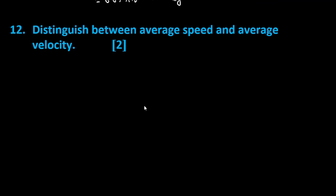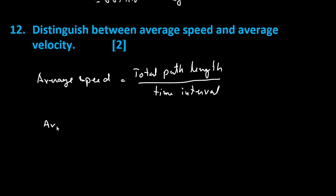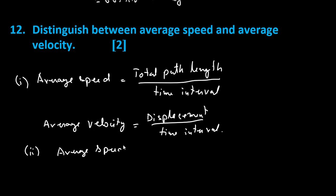Distinguish between average speed and average velocity. So, average speed is equal to total path length divided by time interval. And average velocity is displacement divided by time interval. This is point number 1. And point number 2: Average speed is a scalar quantity, while average velocity is a vector quantity.